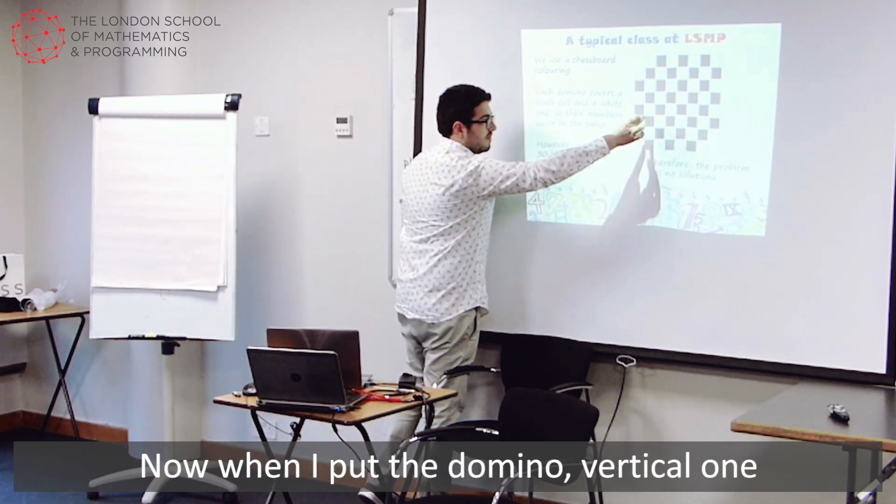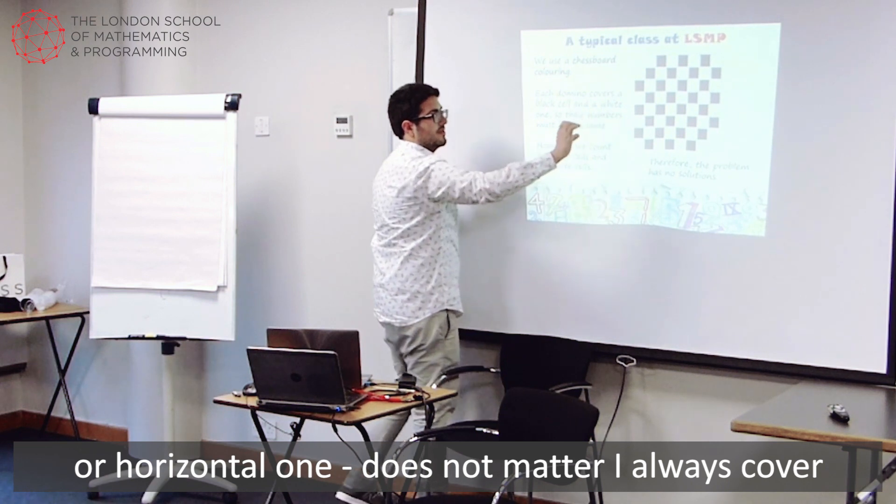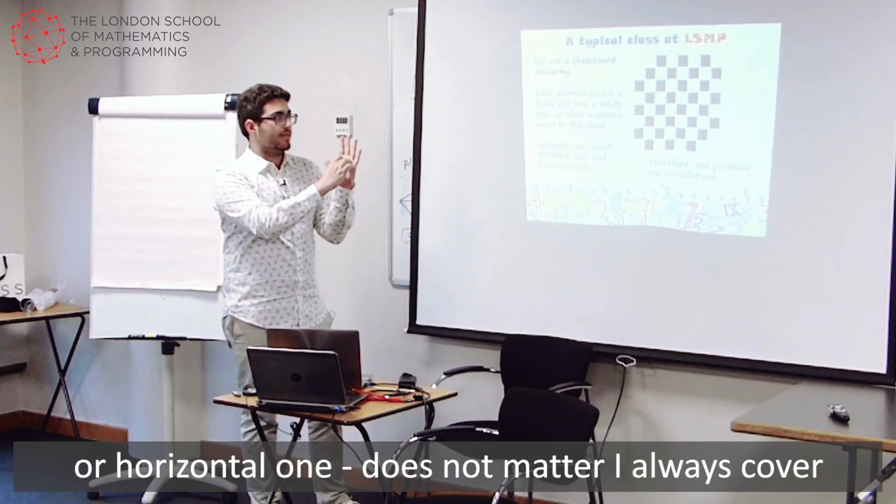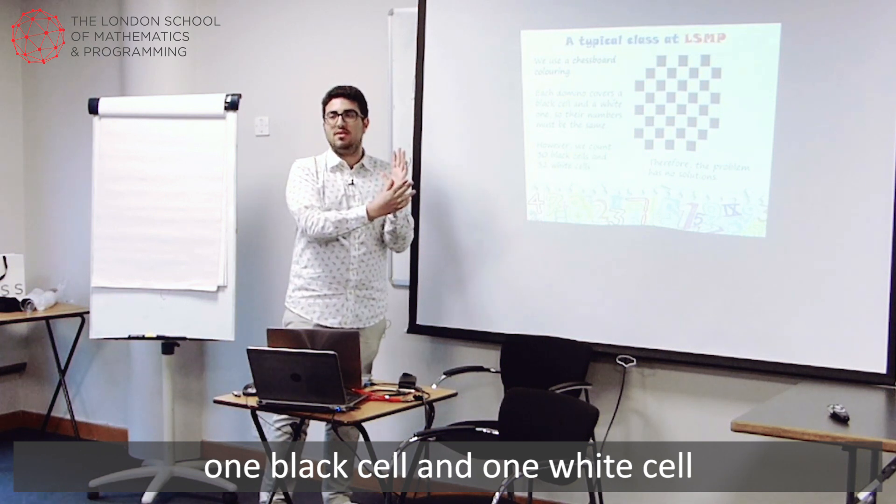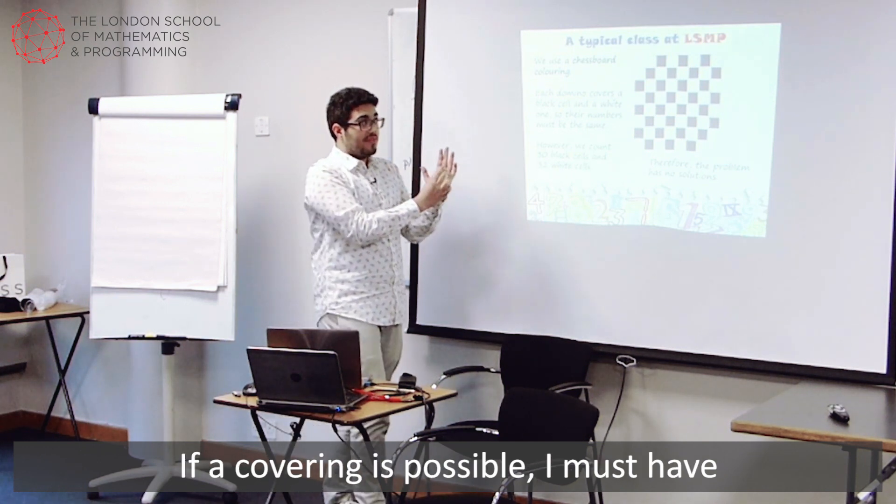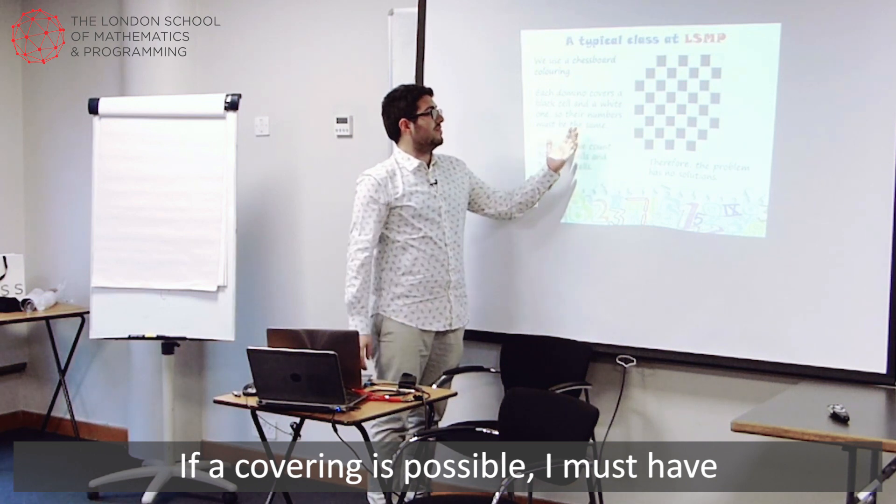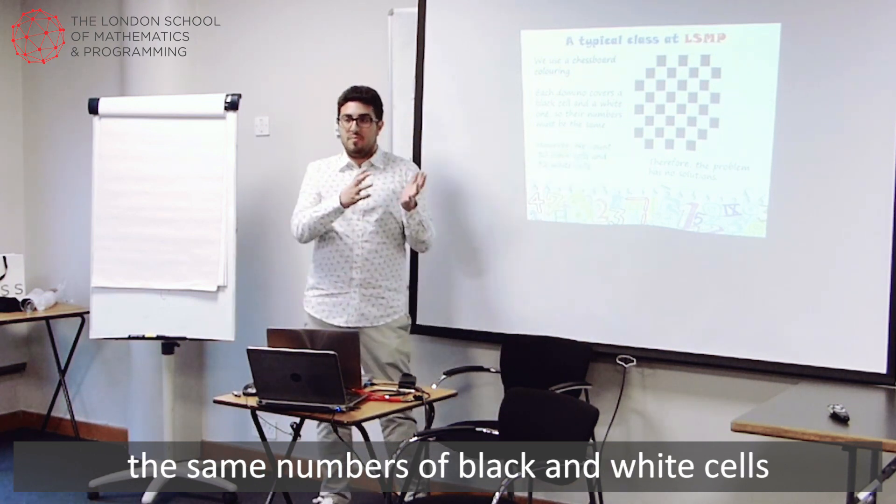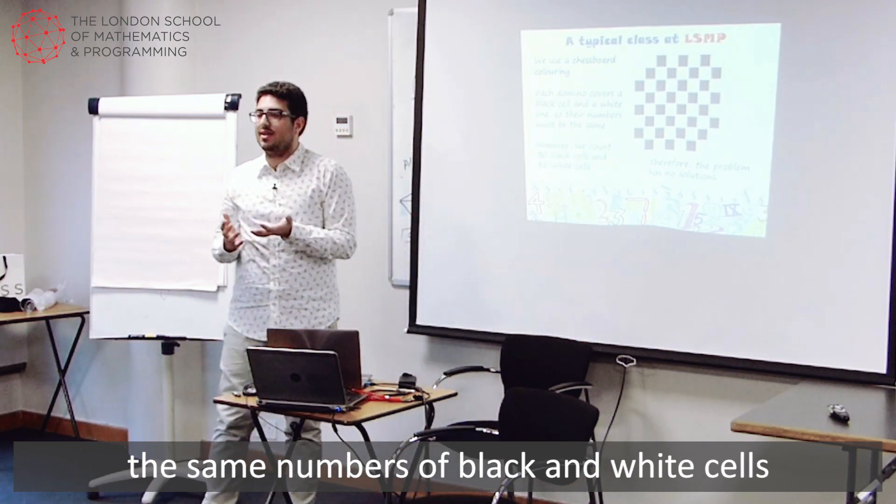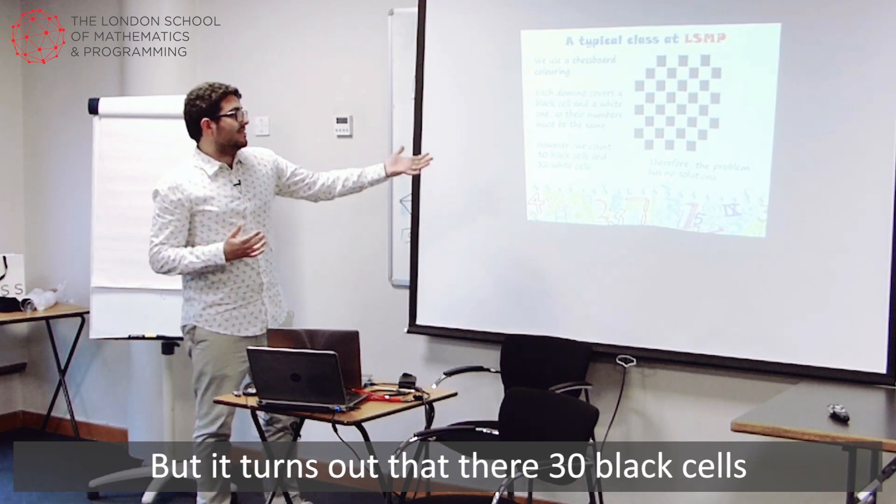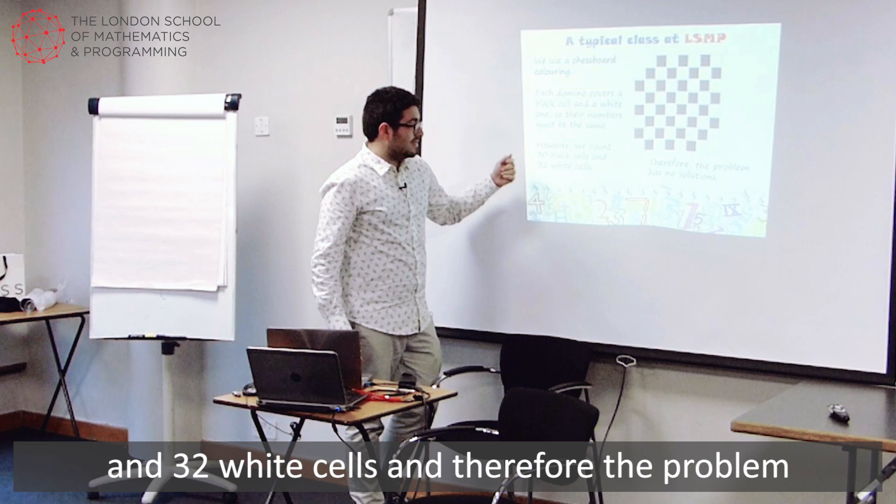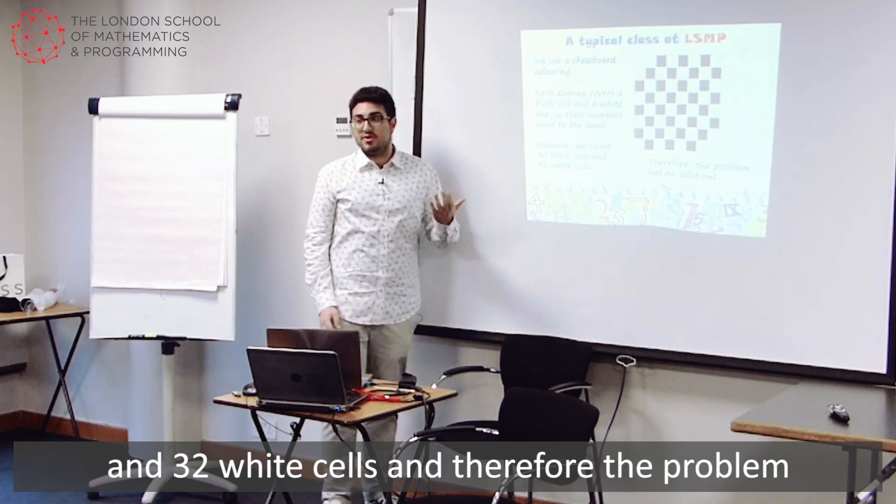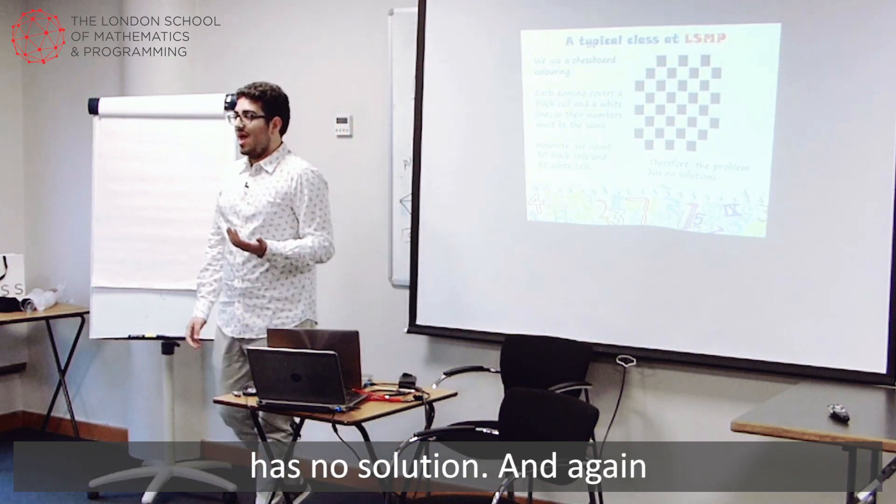Now, when I put a domino, vertical one or horizontal one, doesn't matter, I always cover one black cell and one white cell. So if a covering is possible, I must have the same numbers of black and white cells. But it turns out that there are 30 black cells and 32 white cells. And therefore the problem has no solution.